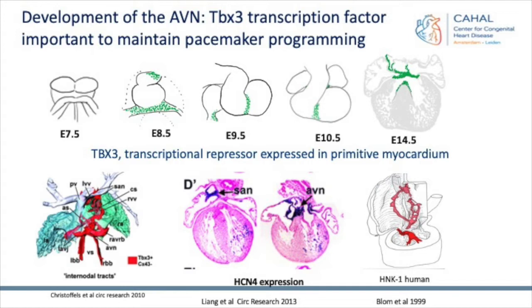But again, also this area between the sinus node, the venous valves that are positive, and this retroaortic ring bundle. All these conduction system markers — the HCN4 reporter mouse — show that HCN4 actually colors all these areas between the sinus node and the AV node. It resembles quite a lot these old pictures from 1999, so the areas remain the same.